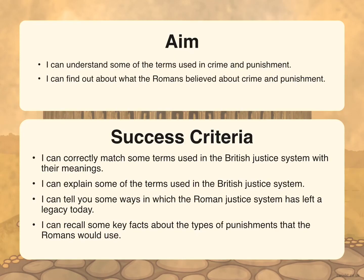The aims of this lesson will be for you to understand some of the terms — words or phrases — used in crime and punishment, and to find out about what the Romans believed about crime and punishment. The success criteria: you're going to match some of the terms used in the British justice system with their meanings, explain some of those terms, tell us some ways in which the Roman justice system has left a legacy today, and recall some key facts about the types of punishments that the Romans would use.